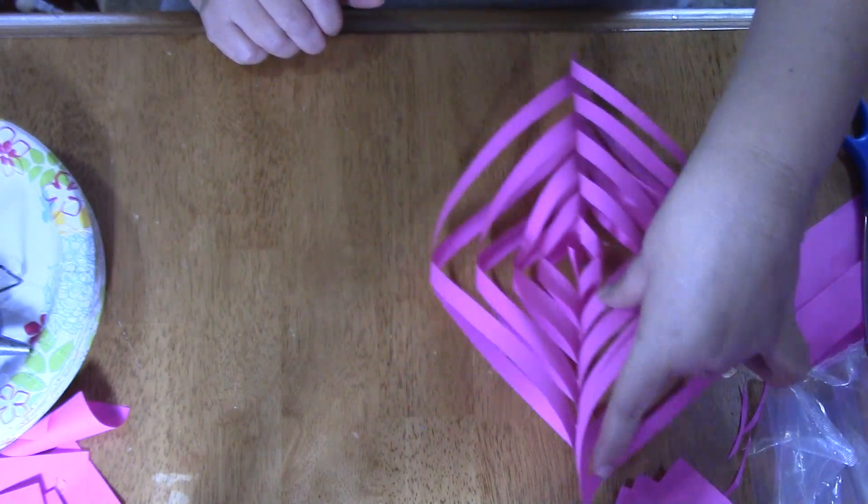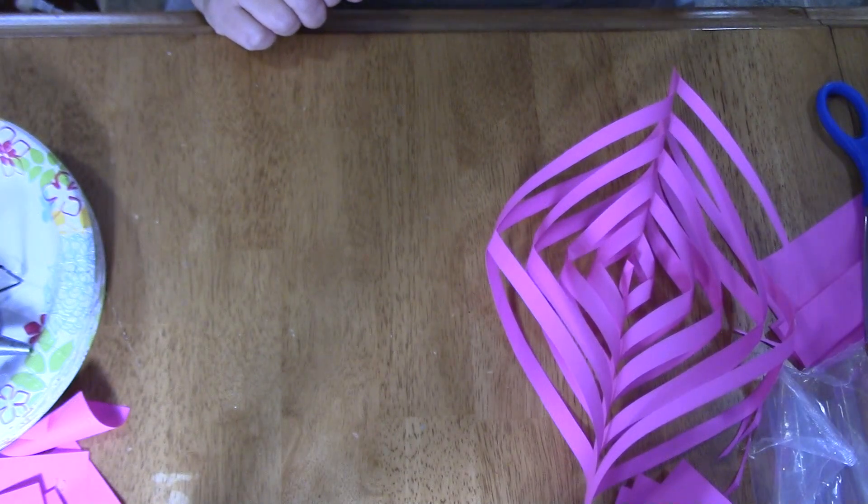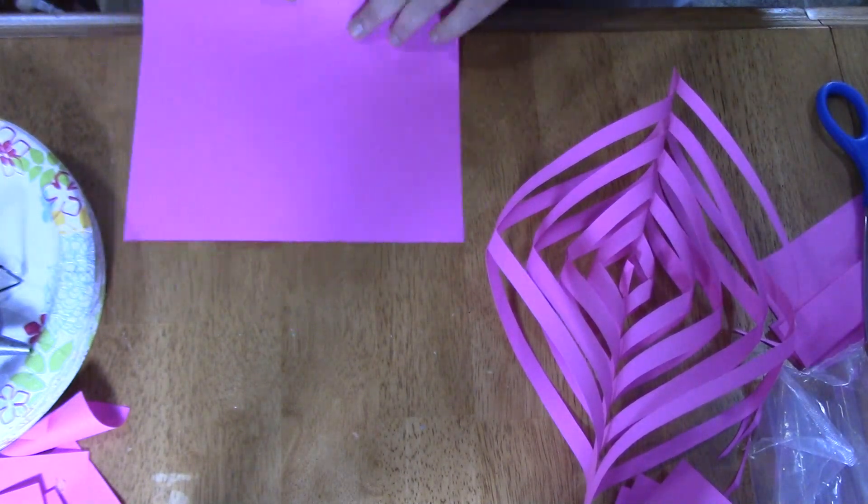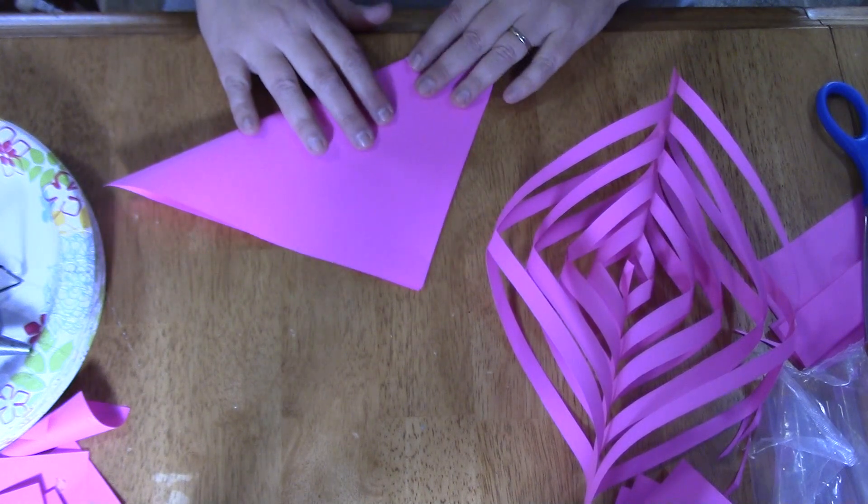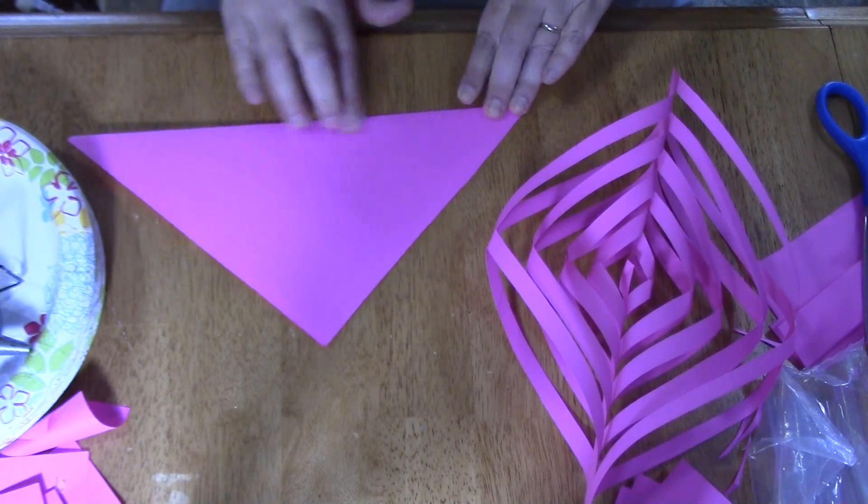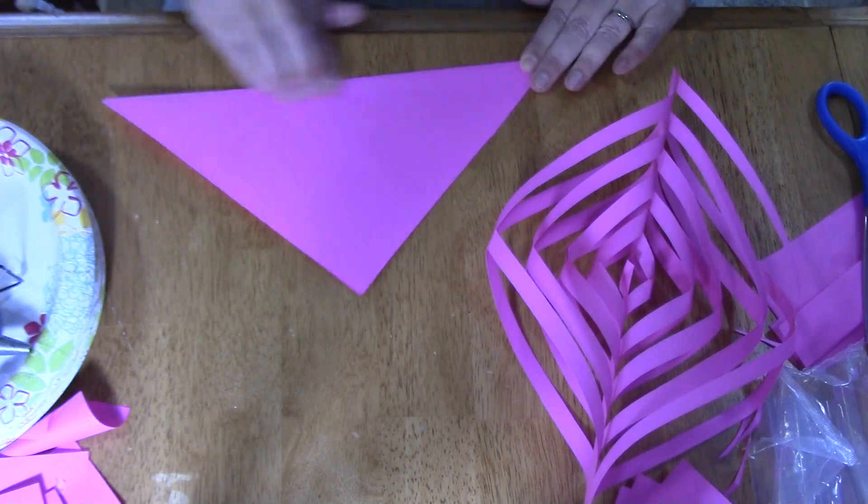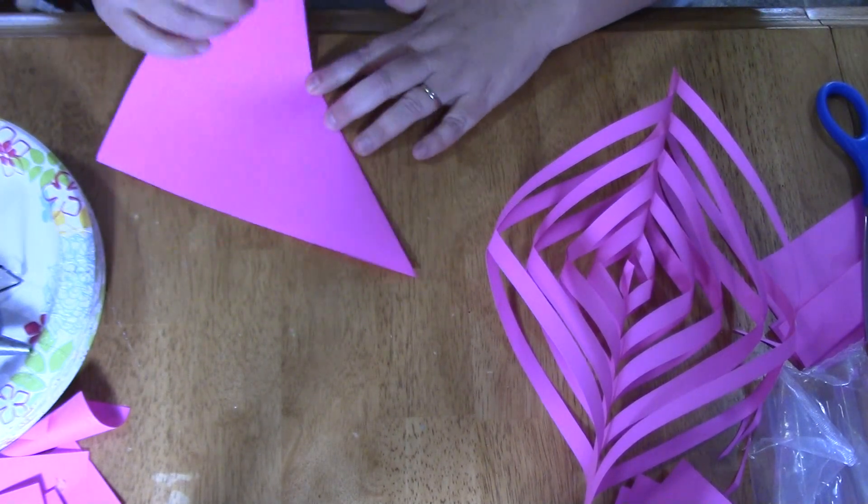I'm going to lay this one right over here. And when you get your paper, it's already most likely going to have a crease in the middle where you had an 8.5 by 11 and you folded it and then cut off the edge. Then you're going to fold it again.